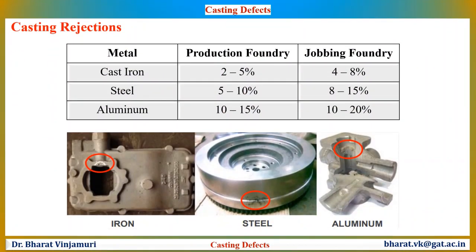If we talk about casting defects, these numbers are really scary. Castings in production foundries producing the same part year after year — for example, railways — even they have 2-5% rejection. If we go to the other extreme, steel foundries and aluminum foundries taking up jobbing orders, which means every time they take up a new project, develop a new casting and then manufacture, they have 10-20% rejection. It sounds like a big waste. Producing 5000 castings and rejecting 1000 castings sounds like a bad idea. We are wasting production resources — it's a huge loss for an industry.